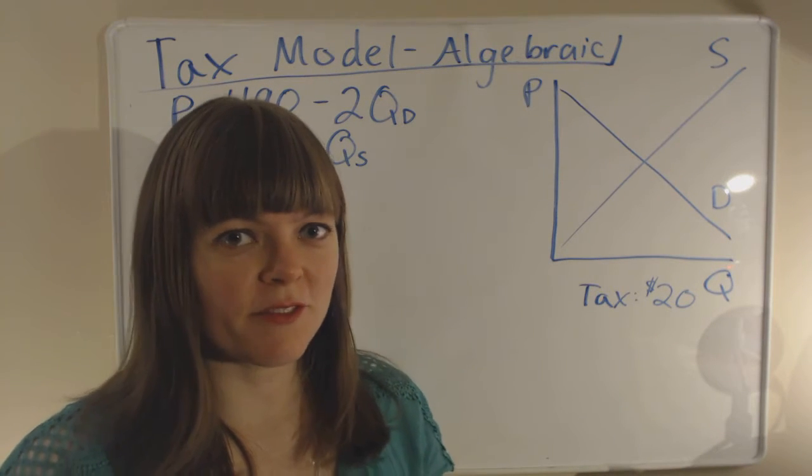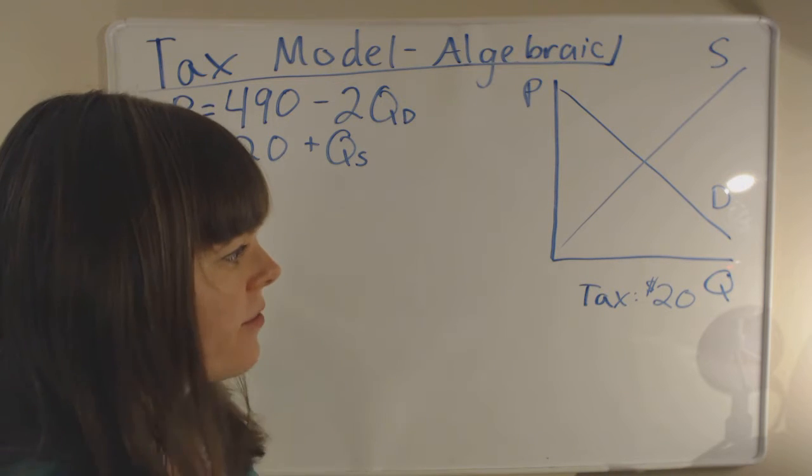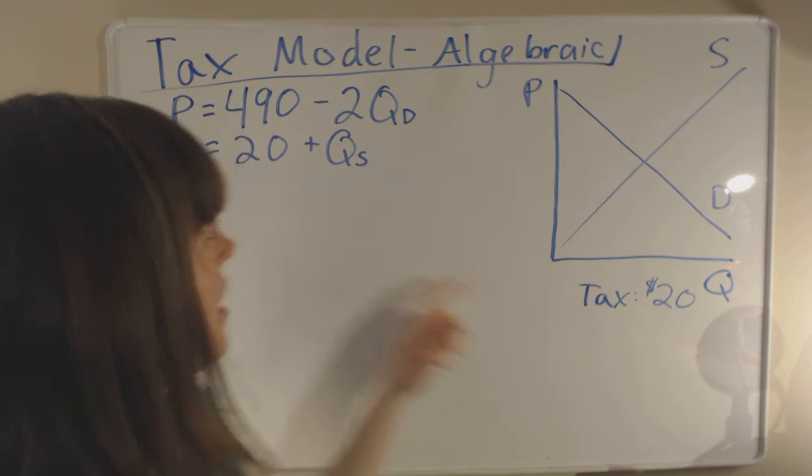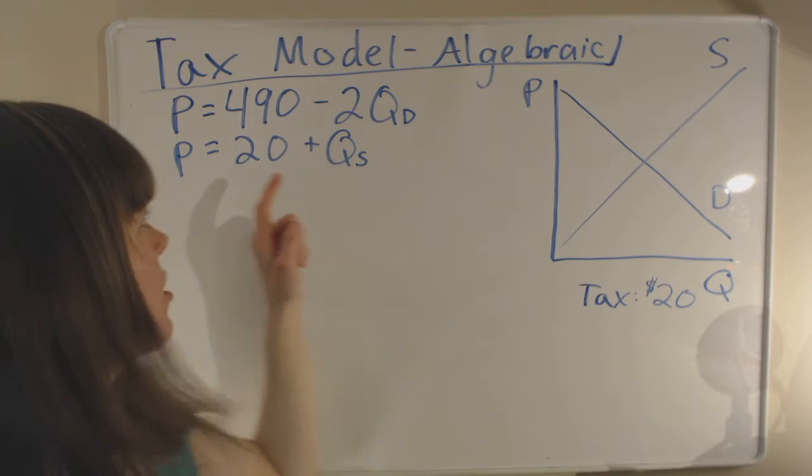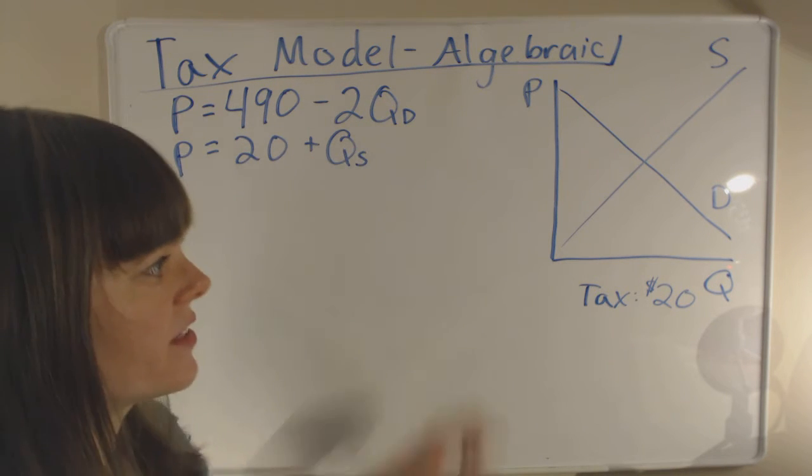So I'm going over the algebraic version of the tax model. And to think about this, first we're going to have a $20 tax, and we have equations for our supply curve and equations for our demand curve in this type of problem.